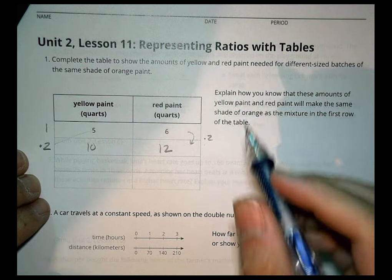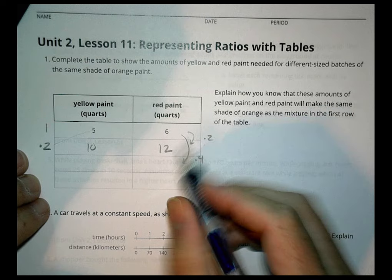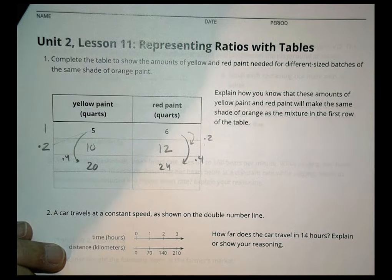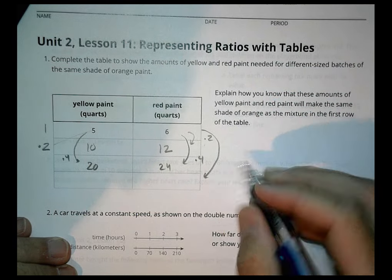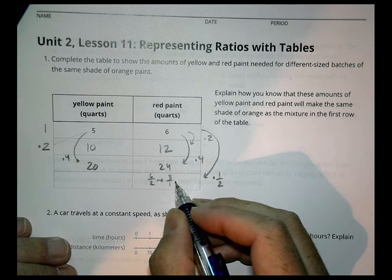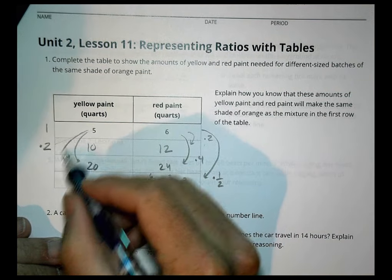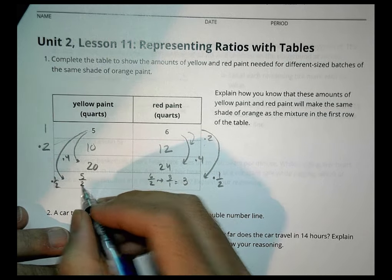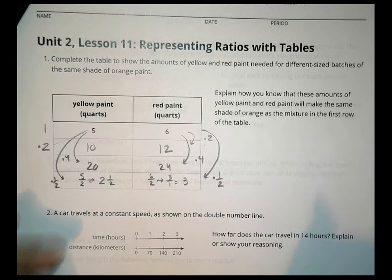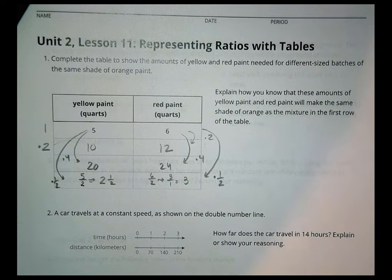If I wanted to make four times as much, I could do six times four, which is 24, and five times four is 20. I could actually even make less — maybe I wanted less than a whole batch. I could multiply everything by a half: six times a half is three, and five times a half is two and a half. The reason those will be equivalent and the same shade is because I'm multiplying both pairs of numbers by the same number, thereby creating an equivalent ratio. Make sure you write down your explanation.